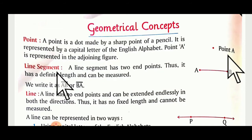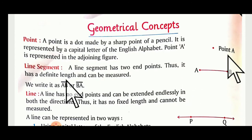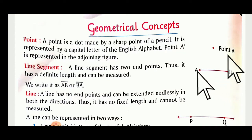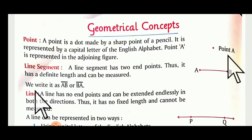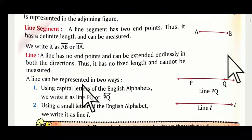What is a line segment? A line segment has 2 end points — you can see 2 end points, named A and B. It has a definite length and can be measured. If a line is given, use the scale — begin with 0 and measure to find the length. We write it as AB, or BA, with a line drawn above it.